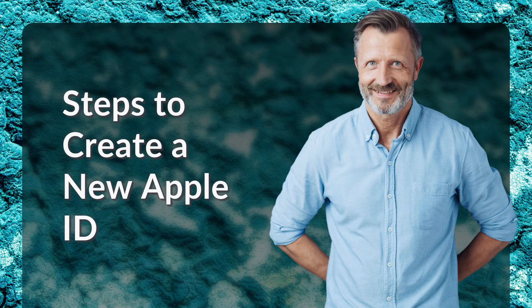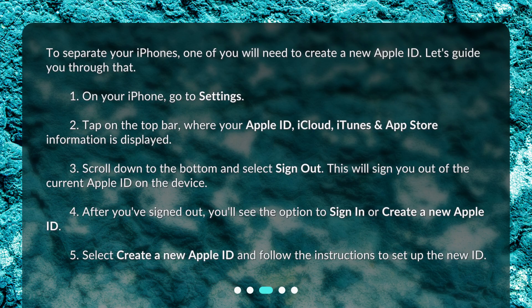To separate your iPhones, one of you will need to create a new Apple ID. On your iPhone, go to Settings. Tap on the top bar where your Apple ID, iCloud, iTunes, and App Store information is displayed. Scroll down to the bottom and select Sign Out — this will sign you out of the current Apple ID on the device. After you've signed out, you'll see the option to sign in or create a new Apple ID. Select 'Create a new Apple ID' and follow the instructions to set up the new ID.